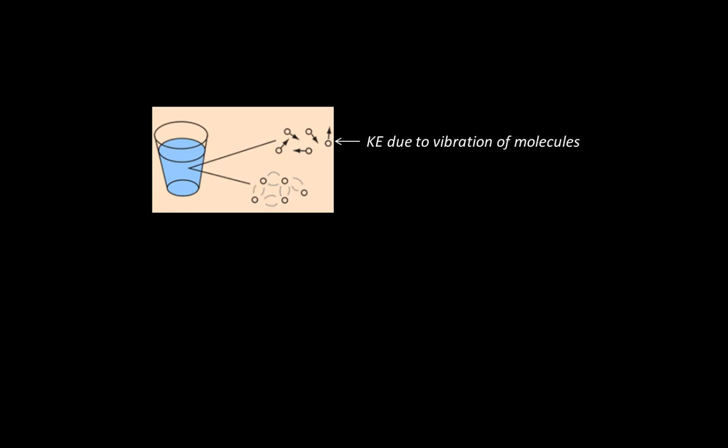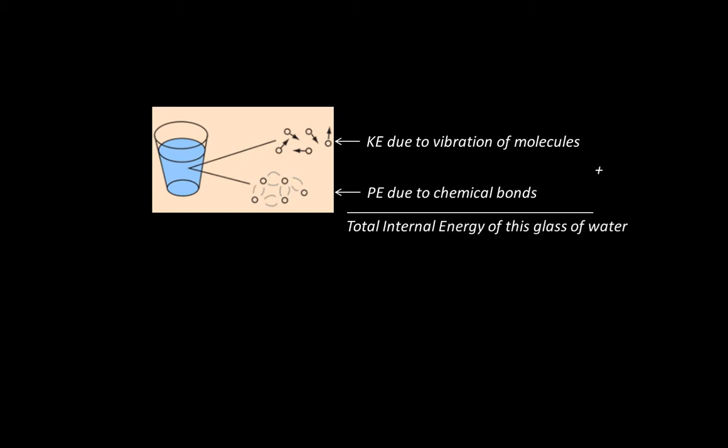Assume we have a glass of water. The water molecules inside this glass are randomly vibrating, and due to this vibration they have some kinetic energy. Along with that vibration, they also have chemical bonds — namely the hydrogen bonds between the water molecules — and that is also a form of energy, which we call potential energy due to the chemical bonds. If we add them up, we have the total internal energy of this glass of water.